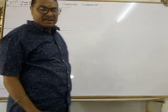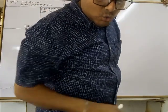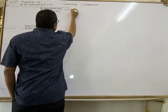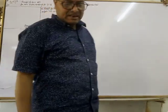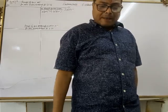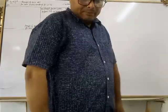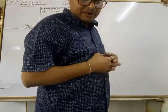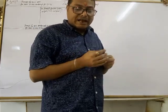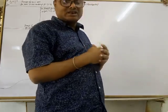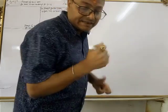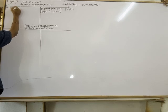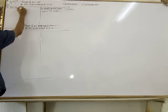Profit before interest on loan is rupees 2 lakhs 26,440. Interest on capital will be allowed at the rate of 7% per annum. Lata is to get a salary of rupees 2,500 per month. Interest on Mamta's loan account is rupees 80,000 for the whole year.